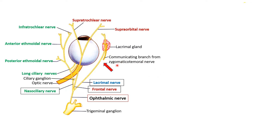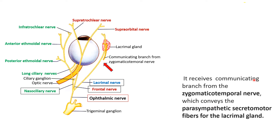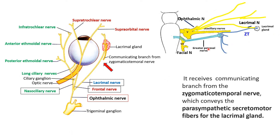The secretomotor fibers reaching the lacrimal gland via the zygomaticotemporal nerve originate from the facial nerve. A branch of the facial nerve, the greater petrosal nerve, brings the preganglionic secretomotor fibers, which relay in the pterygopalatine ganglion hanging from the maxillary nerve. The postganglionic fibers then travel through the maxillary nerve, then the zygomatic nerve, then the zygomaticotemporal nerve, which joins the lacrimal nerve to provide the secretomotor fibers to the lacrimal gland.